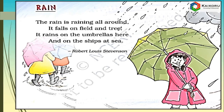Let us sing the poem, Rain. The rain is falling all around, it falls on field and tree, it rains on the umbrella here, and on the ships at sea.